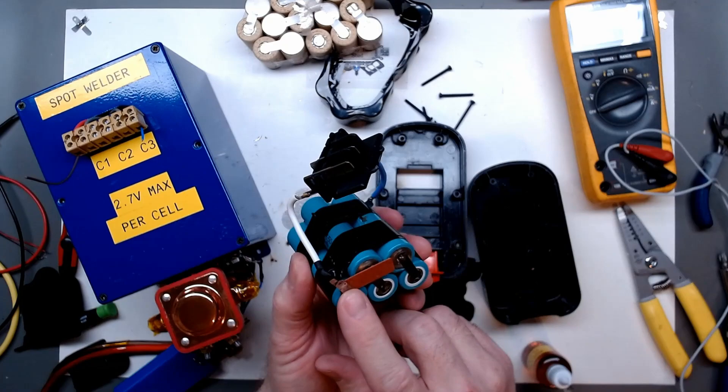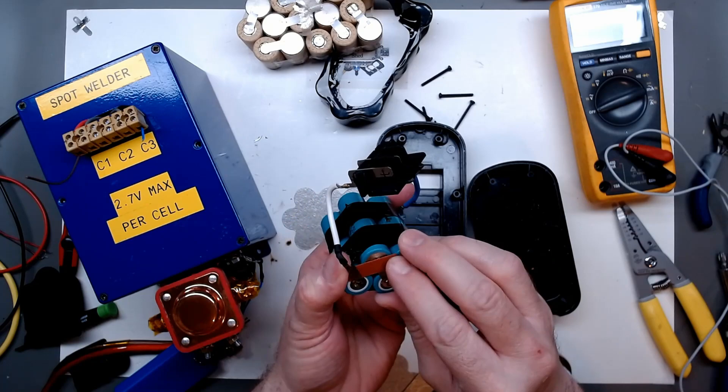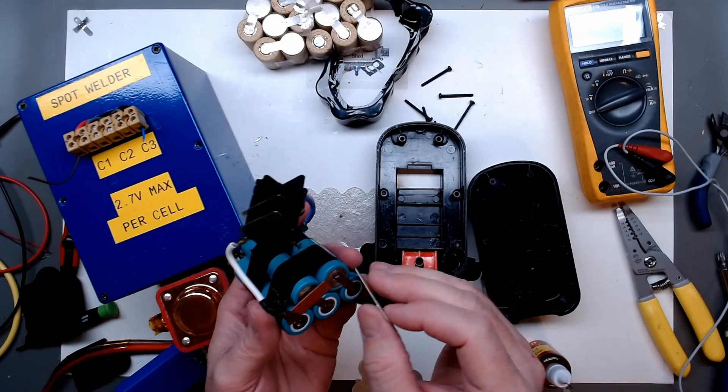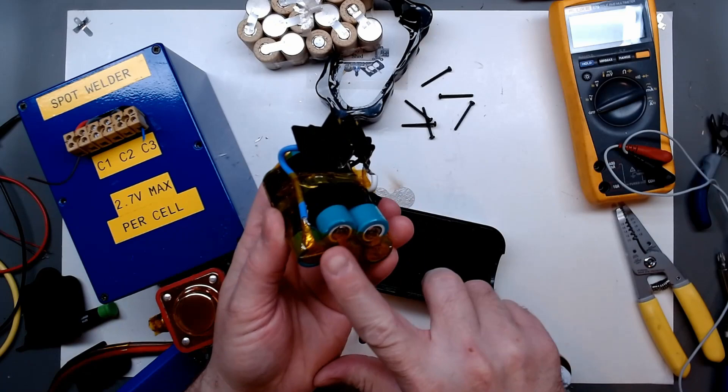Back now, I have just soldered on the positive and the negative lead as a temporary test. Just repurposing some of the insulating mica for the battery pack here. And I'm just going to wrap this in some Kapton tape.